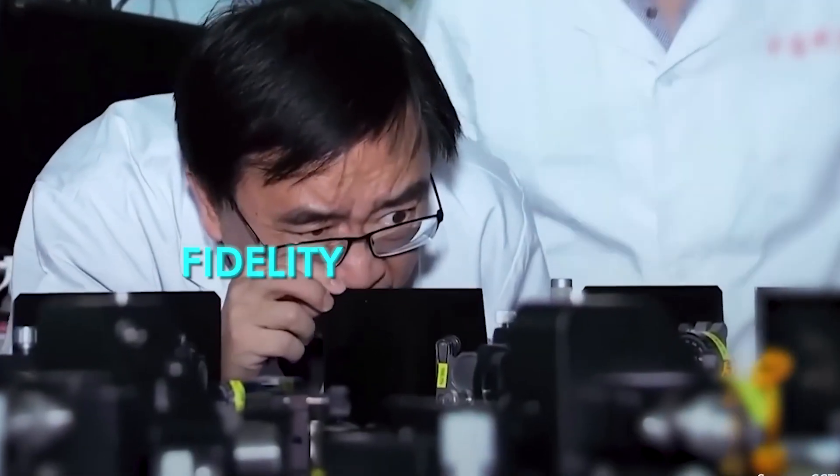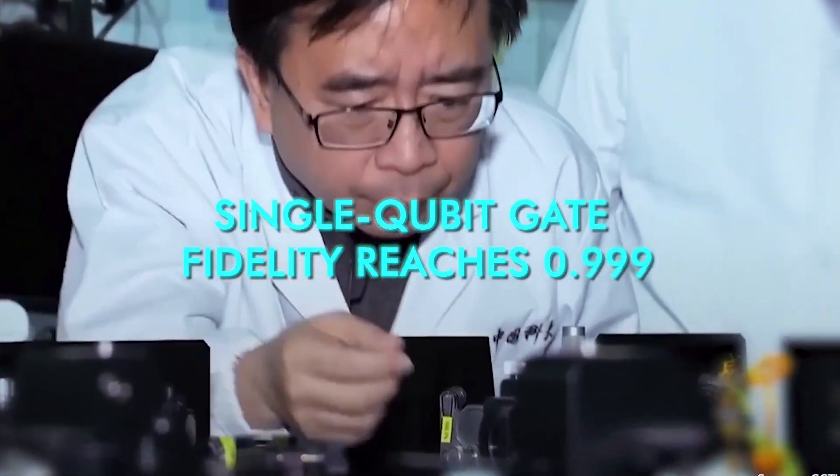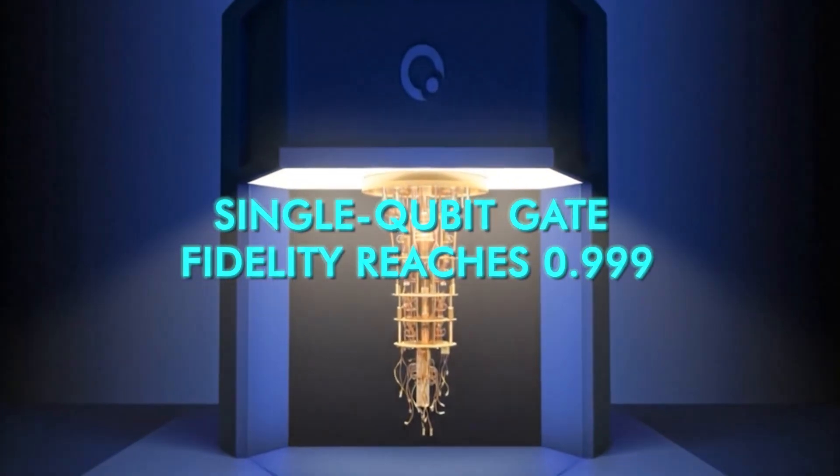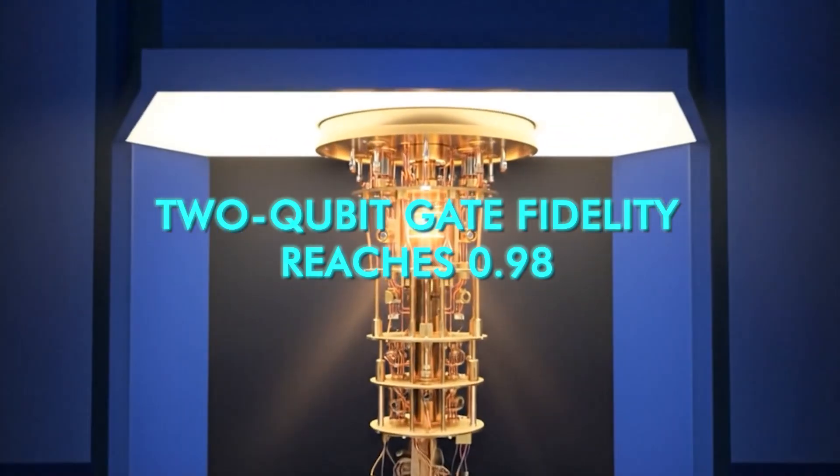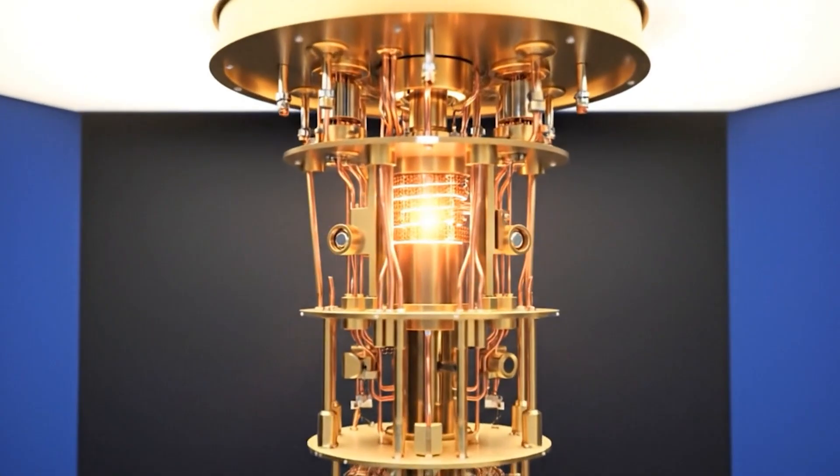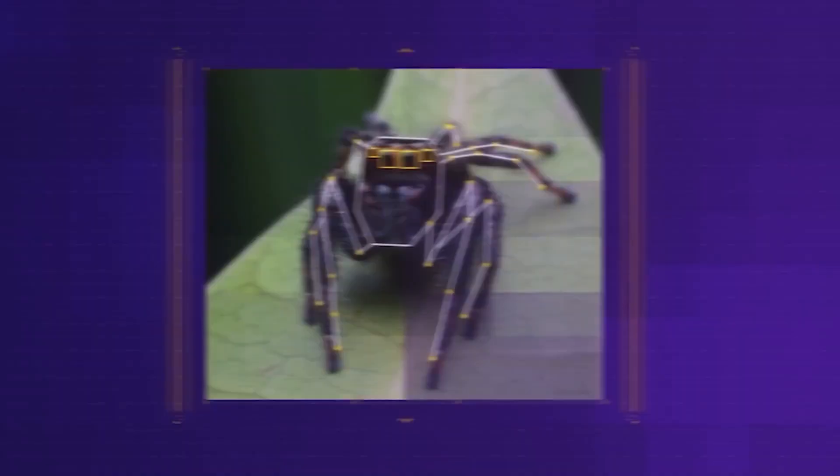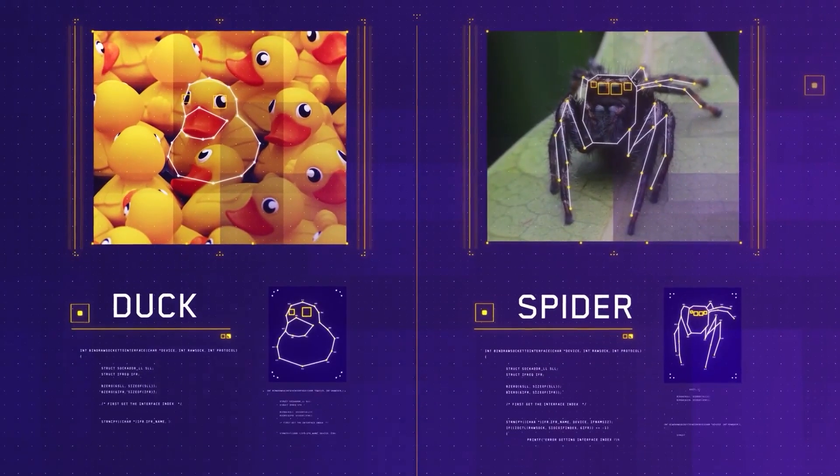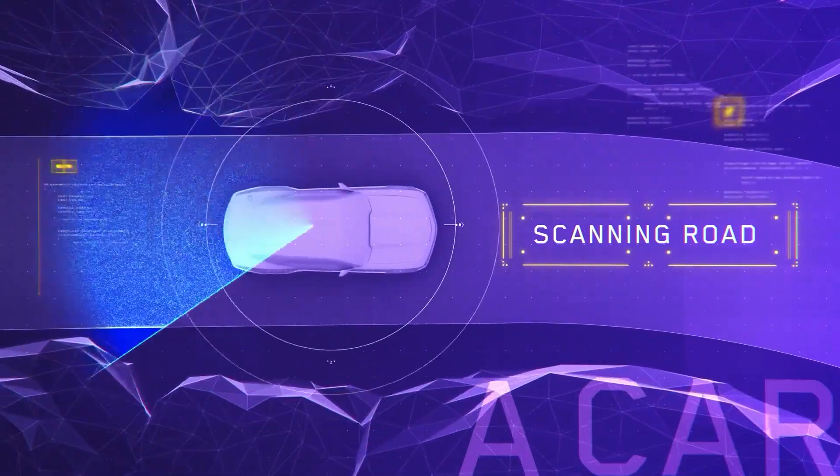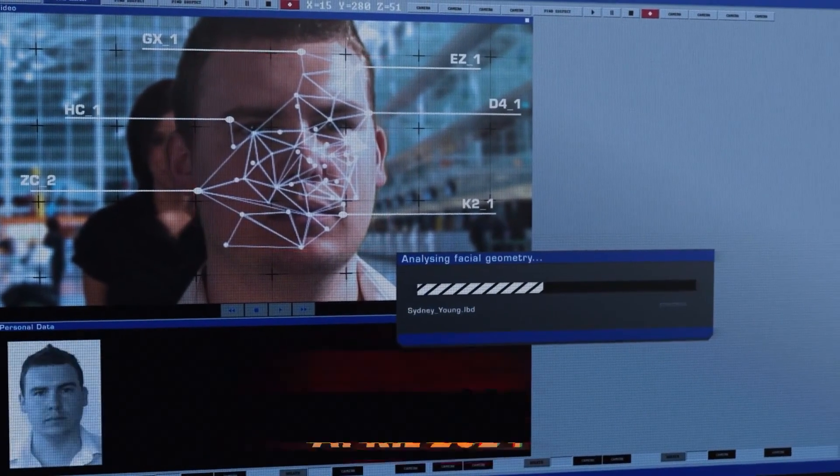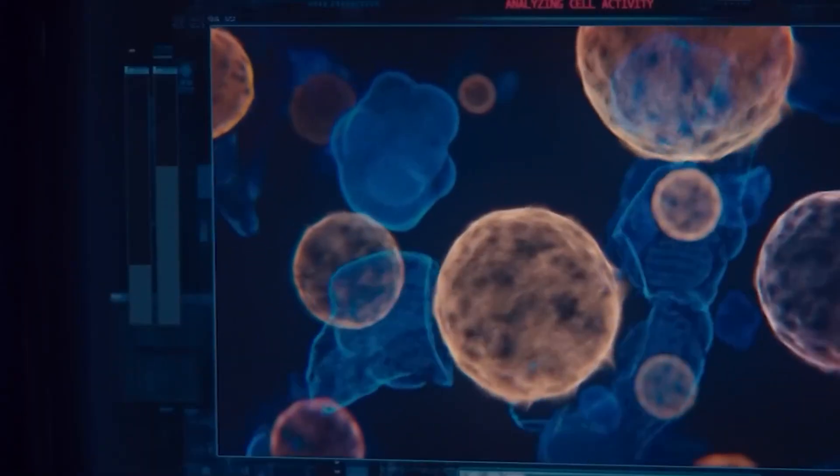However, what stands out about Hanyuan-1 is its measured performance. Its single-qubit gate fidelity reaches 0.999, while its two-qubit gate fidelity reaches 0.98. These are not theoretical targets or laboratory best cases. They are benchmark results that meet the requirements for practical quantum algorithm testing. At this level, quantum computations can be repeated reliably enough to extract useful results across multiple runs, which is essential for any real application.